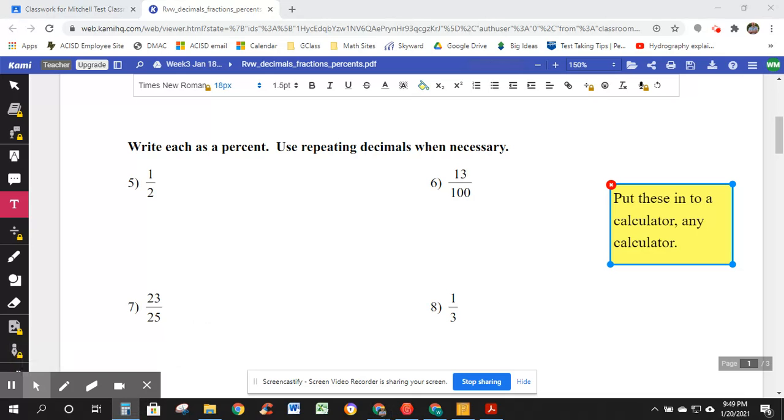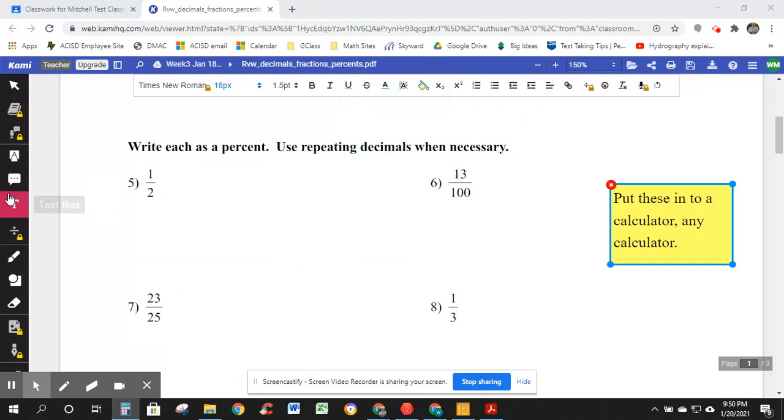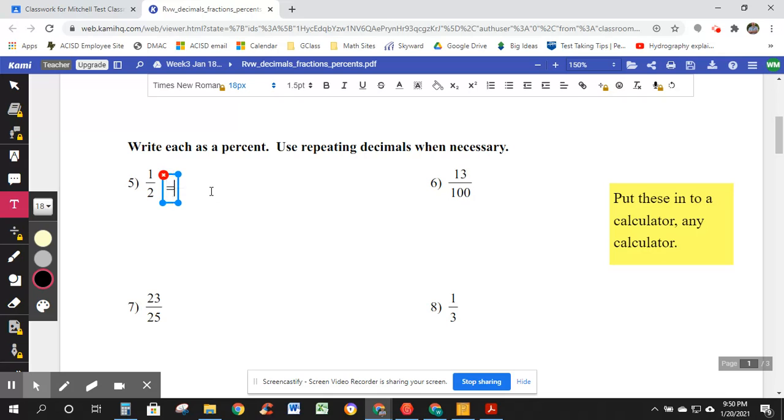But I'm going to put one half into a calculator. So let's go ahead and bring one up. There we go. So one divided by two equals 0.5. Now, if you're good on that, go for it. One divided by two equals 0.5. That's a decimal times 100 is 50. I almost left it as a decimal. Write each as a percent. So fraction put into a calculator multiplied times 100.